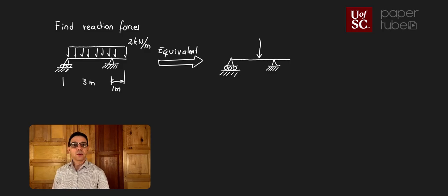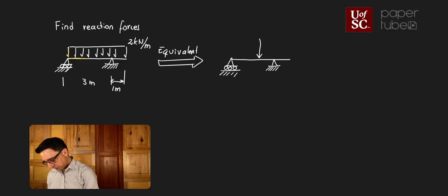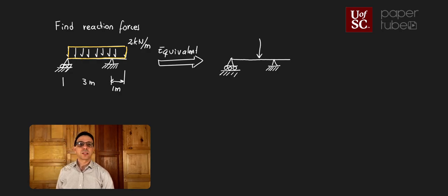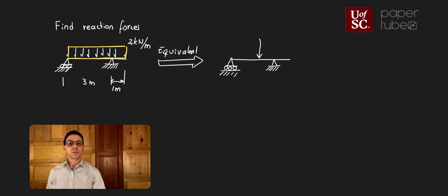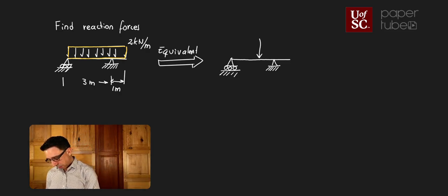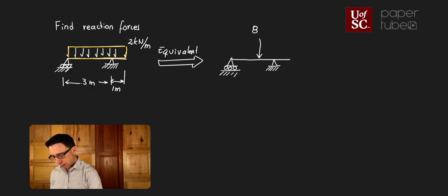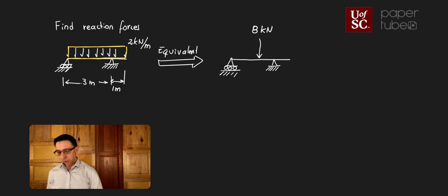The magnitude is going to be the area of that distributed load. If I take this as a rectangle, the area of that rectangle has a height equal to the magnitude of the distributed load and a width equal to the length of the beam. The length of the beam is 4 meters and the height is 2 kilonewtons per meter, so the magnitude of that point load is going to be 8 kilonewtons — that is 4 times 2.